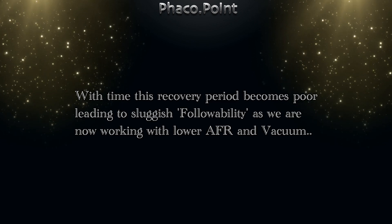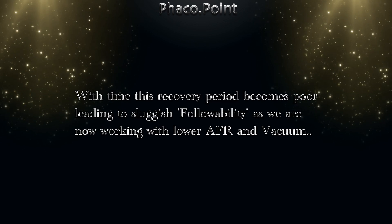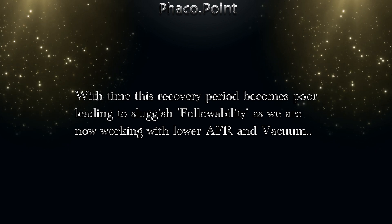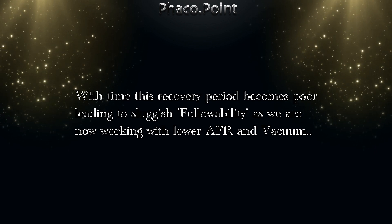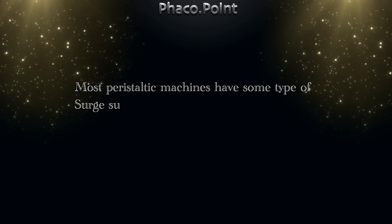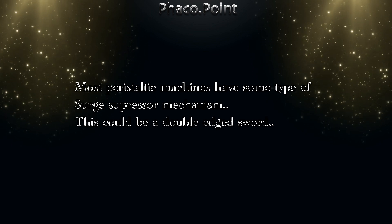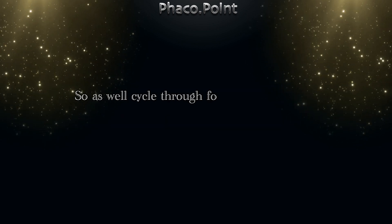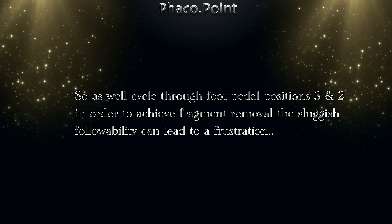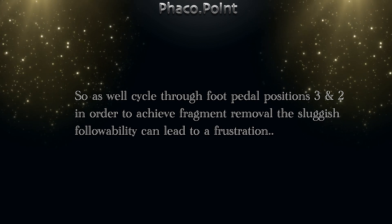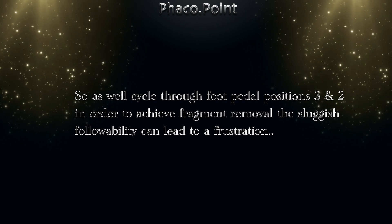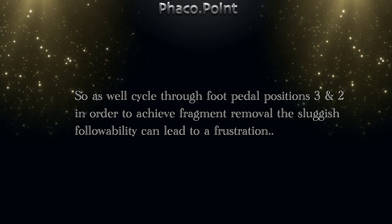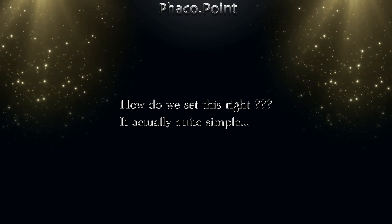However, with the passage of time, as the machine becomes older, this recovery period becomes poor, and that's the reason why the followability is sluggish — as you're now working with lower AFR and vacuum. Most peristaltic machines have some type of surge suppressor mechanism, which can actually be a double-edged sword, because as we cycle through foot pedal positions three and two during the fragment removal stage, sluggish followability can occur somewhere during the middle of the procedure, leading to a lot of frustration.